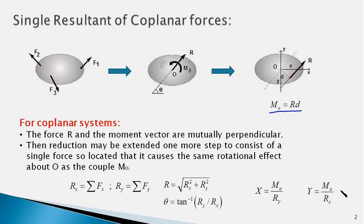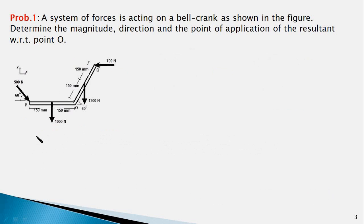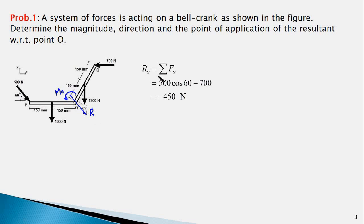Now that we have covered the basic theoretical aspects, let's go ahead and solve a problem. In this problem we have a bell crank POQ which is acted upon by several forces as shown in the diagram. We are required to find a single resultant force of these forces. As a first step we should find the equivalent force-couple system — the resultant force R and a couple of moment Mo. We shall determine the force R from its x and y components using Rx = ΣFx, meaning the x-component of R equals the sum of x-components of all the forces.